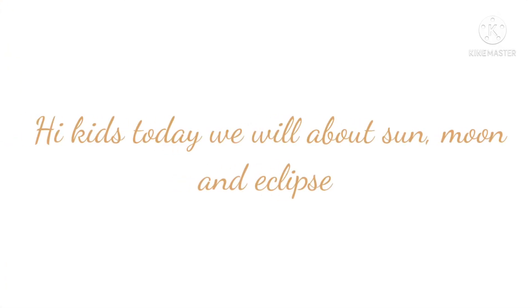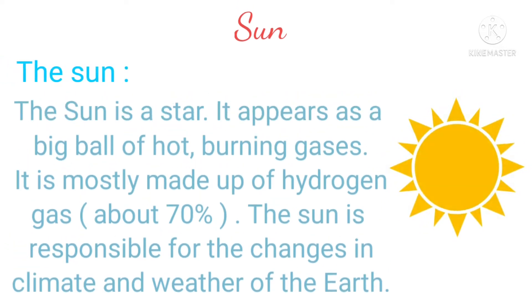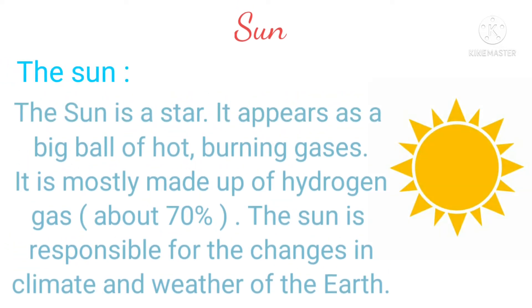Hi kids, today we will learn about sun, moon, and eclipse. The sun appears as a bright ball of hot burning gases. It is mostly made of hydrogen gas, about 70 percent. The sun is responsible for the changes in climate and weather of the earth.